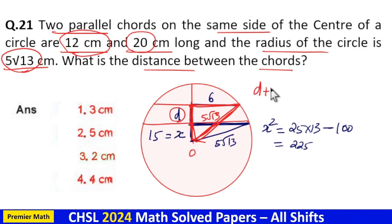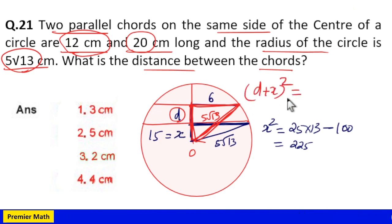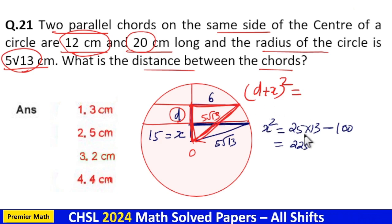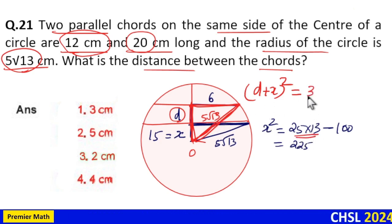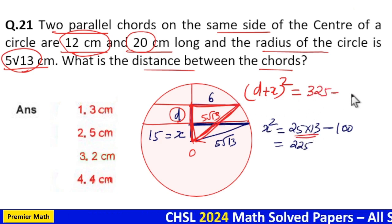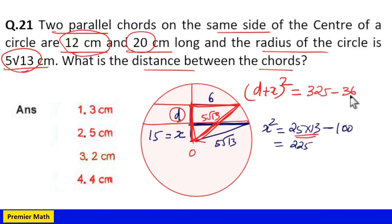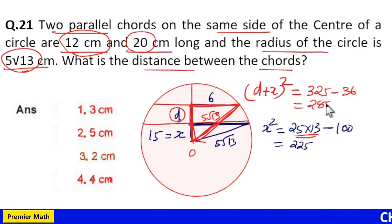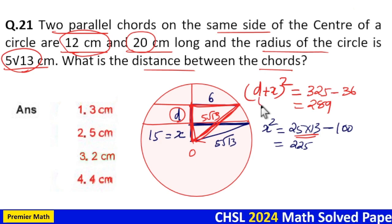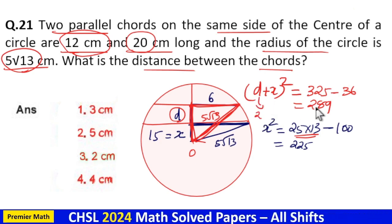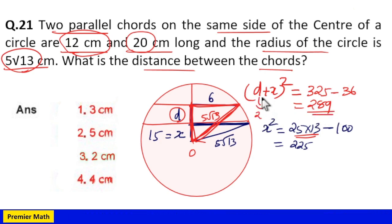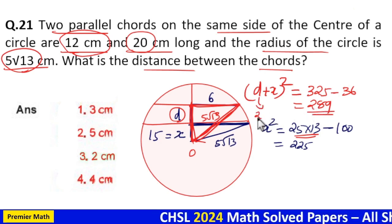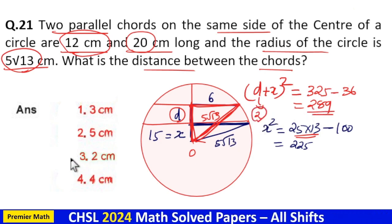(d + x)² = (5√13)² − 6² = 325 − 36 = 289, which means d + x = 17, since 17² = 289. With x = 15, d = 17 − 15 = 2. So the answer is option 3: the distance between the chords is 2 cm.